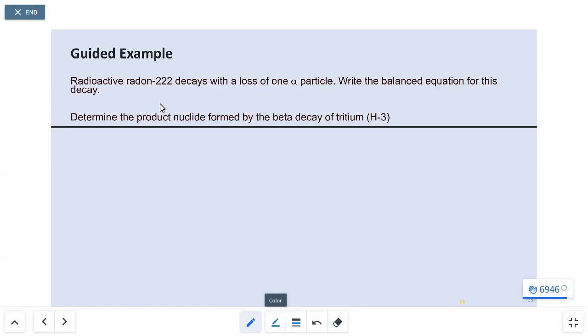We've got radon that decays with the loss of an alpha particle. What is the balanced equation for this decay? And then a secondary question, what is the product nuclei formed by the beta decay of tritium?